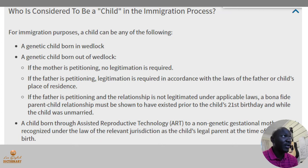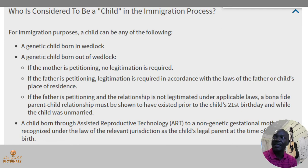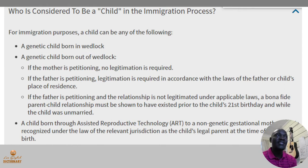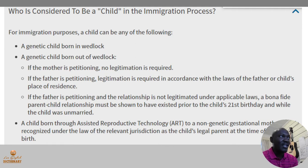Or a child born out of wedlock. If the child is born out of wedlock, there are about three things that have to happen. If the mother is the one filing the documentation, there is a need to prove that she is the legitimate mother. If the father is the one filing documentation, then the father has to fill in the documentation in accordance with the laws of the father's or the child's place of residence. So the laws of your country determine how the father should be considered to be the legitimate father.